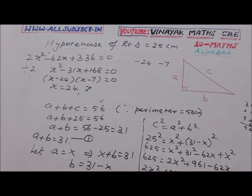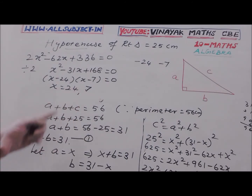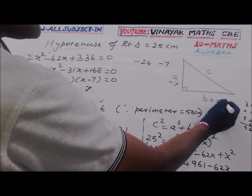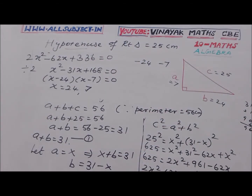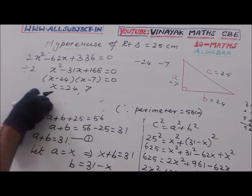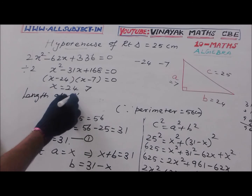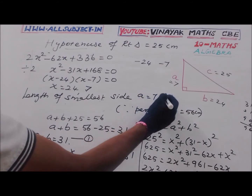Taking X equal to 7, the sides are A equals 7, B equals 24, and C equals 25. Therefore, the smallest side is A equal to 7 centimetres.